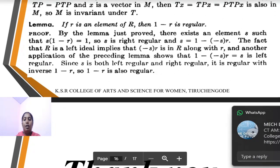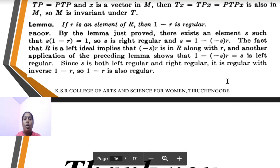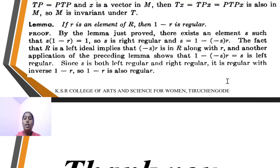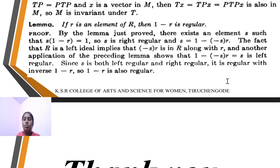Lemma: if r is an element of R, then 1 − r is regular. By the lemma just proved, there exists an element s such that s(1 − r) = 1. So s is right regular and s = 1 − (−sr). The fact that R is a left ideal implies −sr is in R along with r. By using the lemma, we have already shown it is left regular. So s is both left regular and right regular; it is regular with the inverse of 1 − r. So 1 − r is also regular.